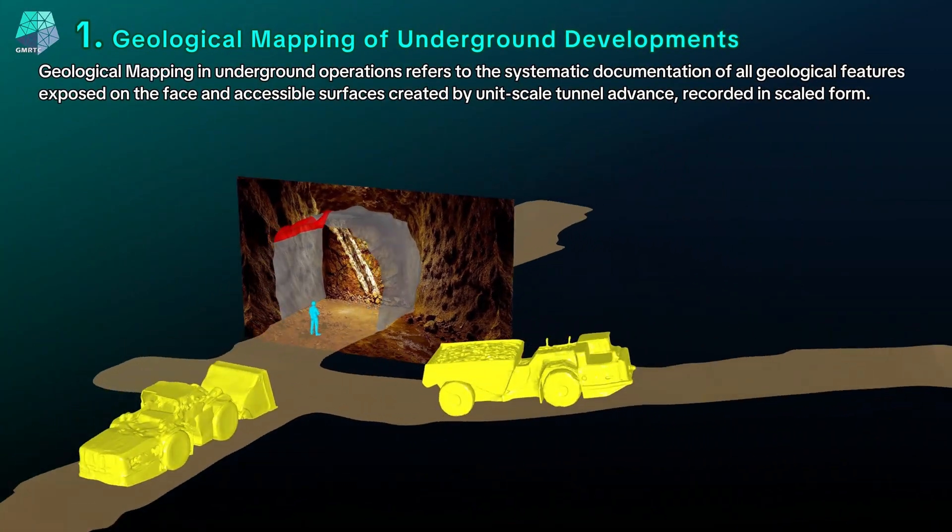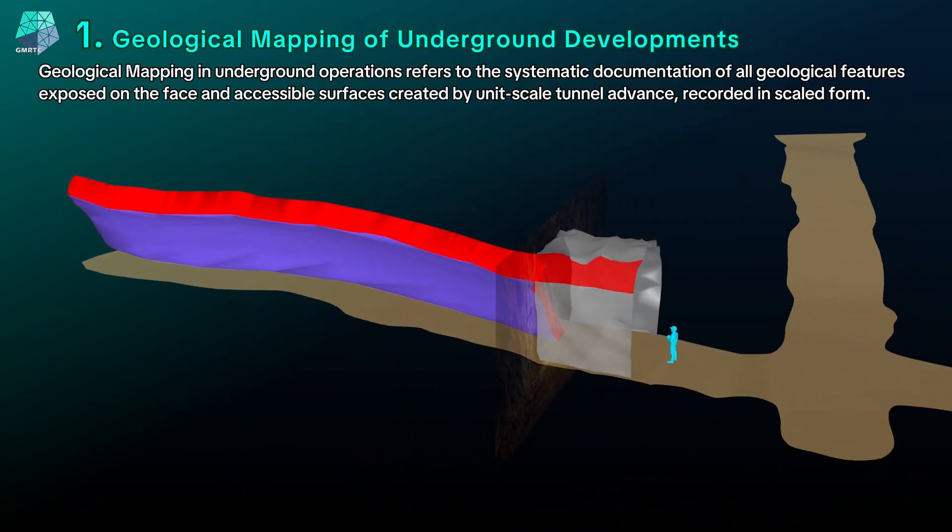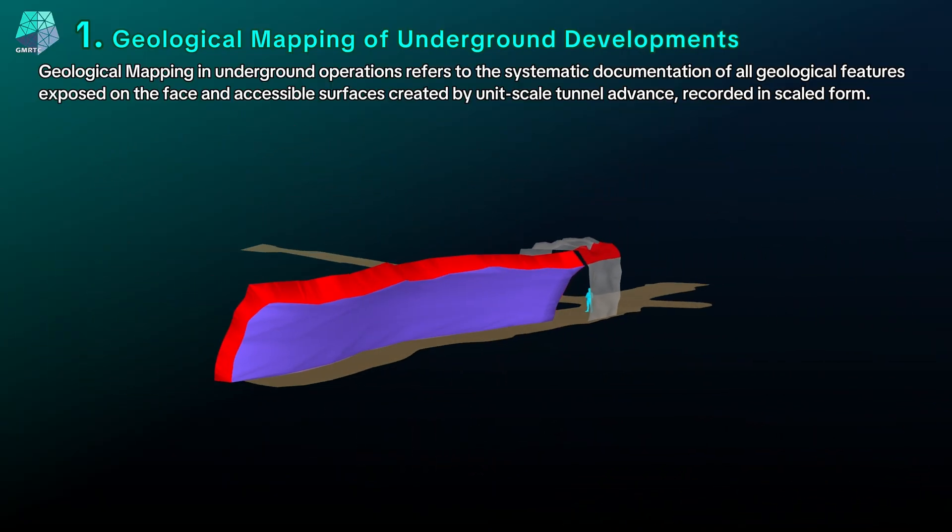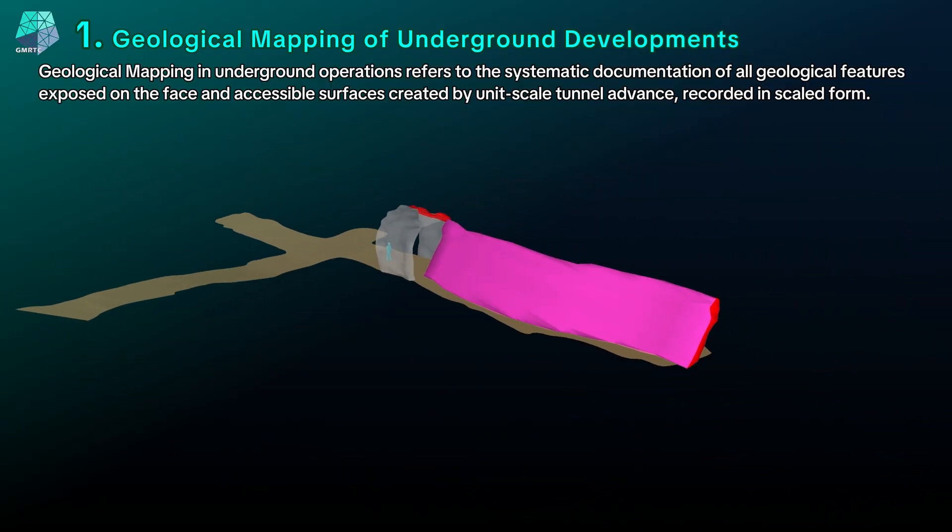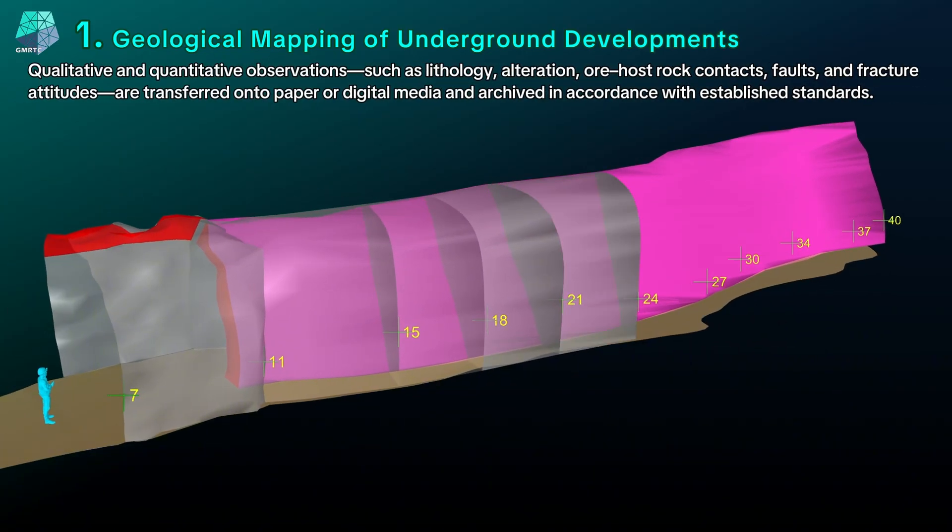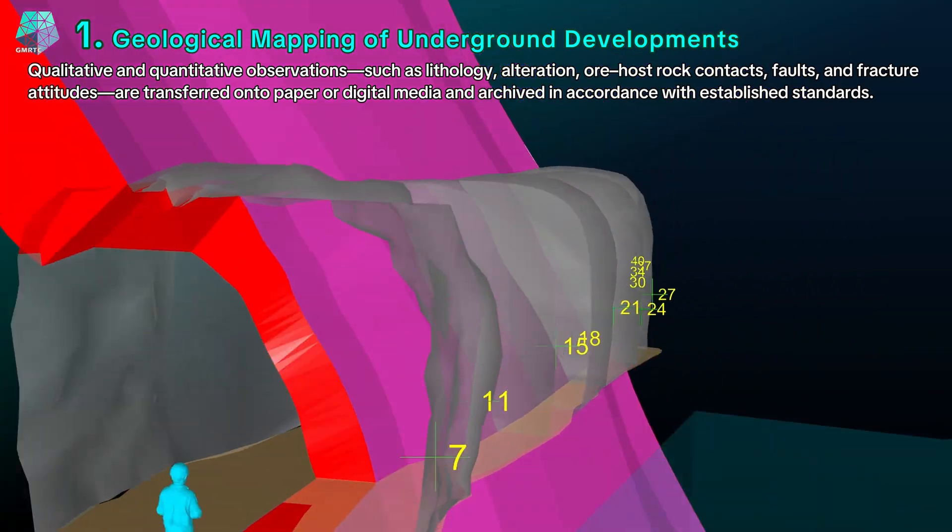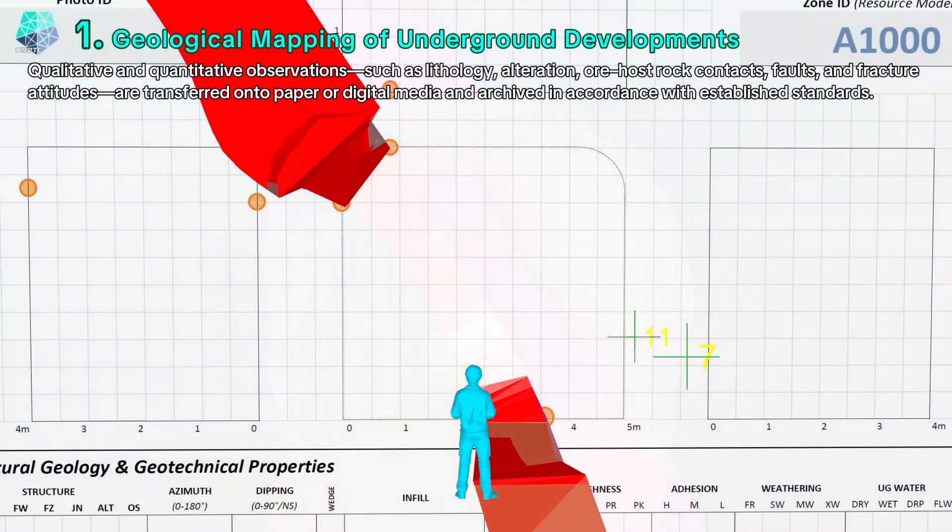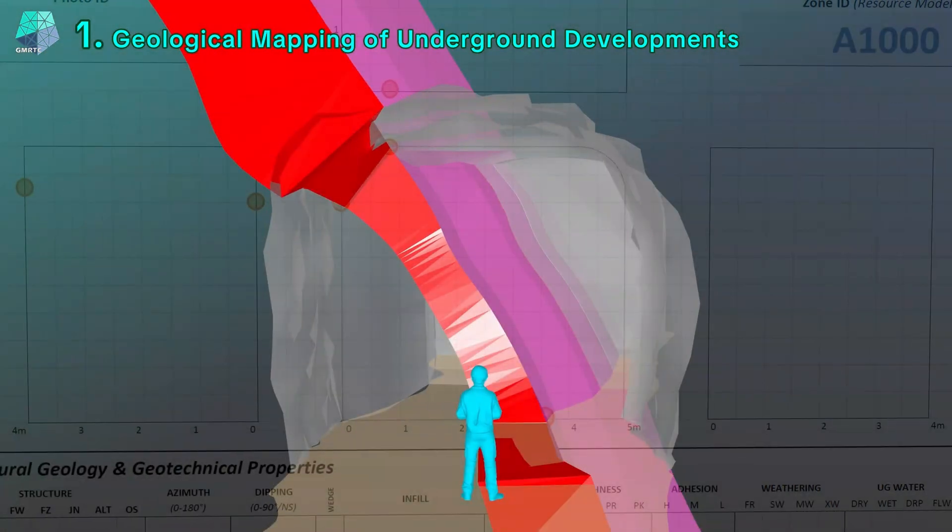Geological mapping in underground operations refers to the systematic documentation of all geological features exposed on the face and accessible surfaces created by unit scale tunnel advance. Recorded in scaled form, qualitative and quantitative observations such as lithology, alteration, or host rock contacts, faults, and fracture attitudes are transferred onto paper or digital media and archived in accordance with established standards.